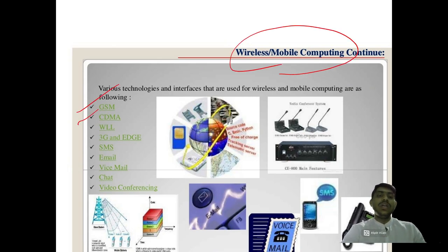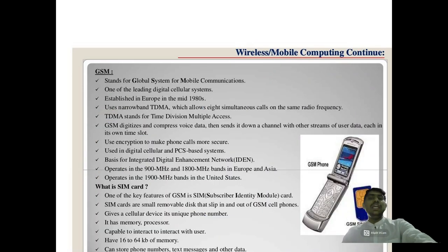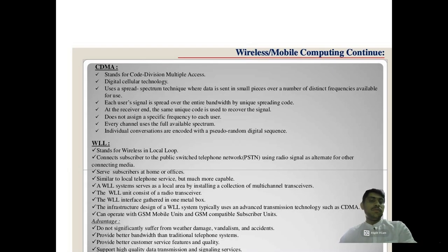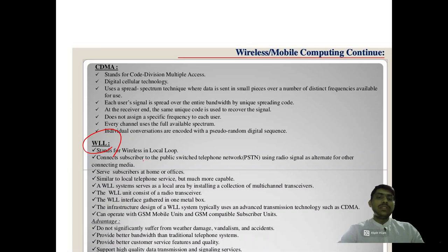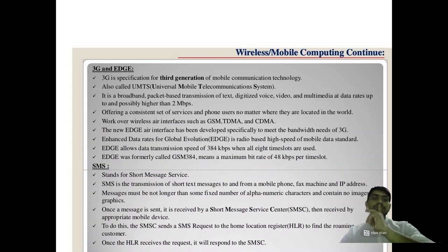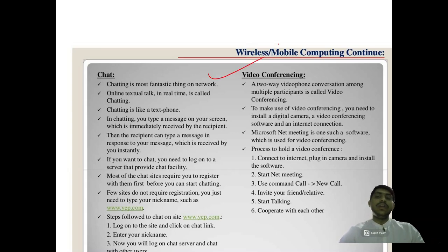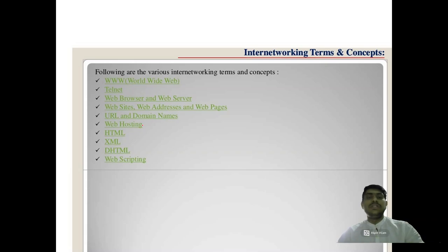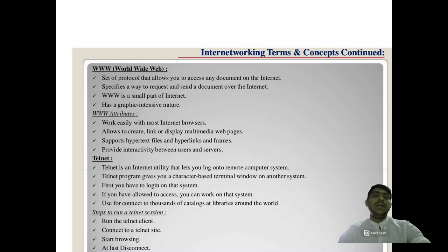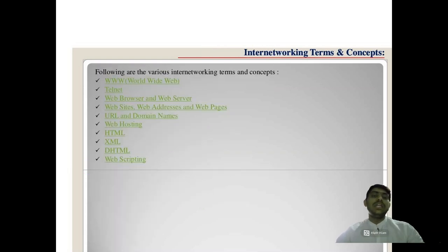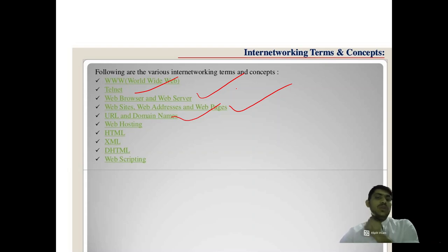Wireless mobile computing topics: video conferencing, email, voice mail, and chat. Important question: what is WLL — Wireless in Local Loop — which connects subscribers to the Public Switch Telephone Network (PSTN). Also: Telnet (Telecommunication Network), web browser, web server, website, web address, web pages, URL, domain names, web hosting, HTML, and XML — these are all topics they can ask questions about.